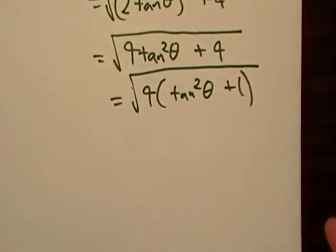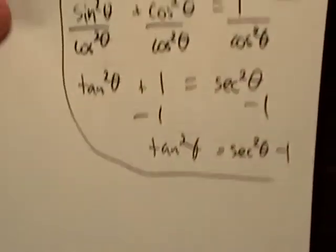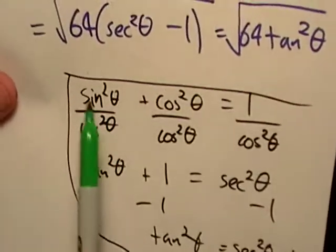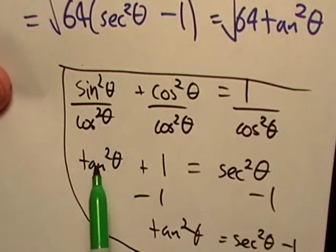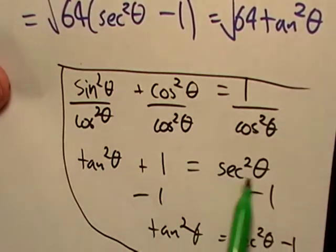Now we got an identity that we can use, and I think we actually derived this not too long ago in our last problem. We found out that using the Pythagorean Theorem with trig identity, we found out that tan squared plus 1 is equal to secant squared.